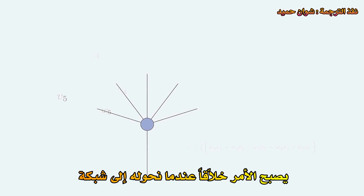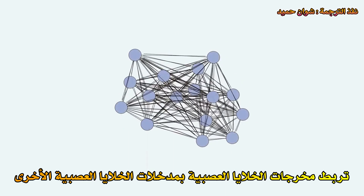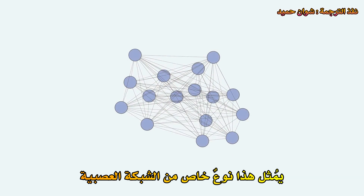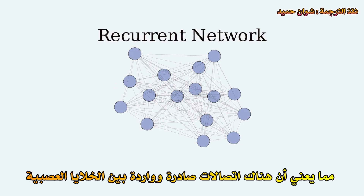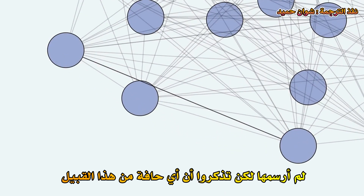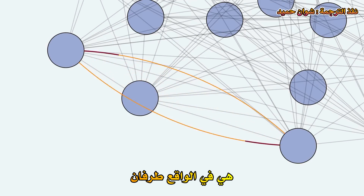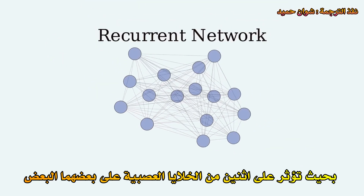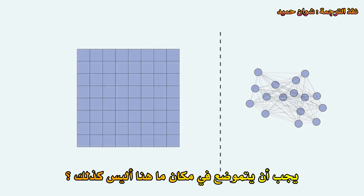So it gets interesting once we turn this into a network, connecting the outputs of neurons to the inputs of other neurons. This is a special type of neural network — a recurrent network, meaning that there are back-and-forth connections between the neurons. Remember that any such edge is actually two edges, so that the two neurons influence each other. But what does this have to do with memory? Well, it needs to be somewhere in here, doesn't it?